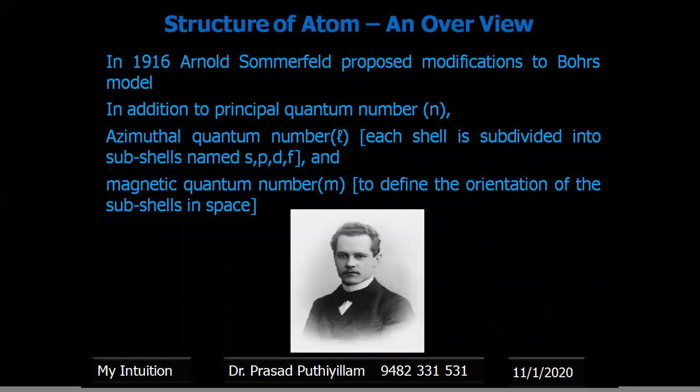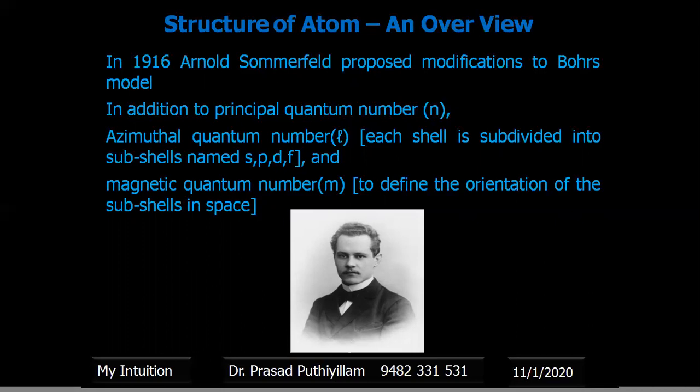In 1916, Arnold Sommerfeld proposed modifications to Bohr's model. In addition to the principal quantum number, he introduced the azimuthal quantum number L, stating that each shell is subdivided into subshells named S, P, D, and F. He also introduced the magnetic quantum number, which defines the orientation of a subshell in space, and electron spin was also considered.